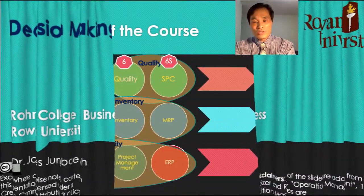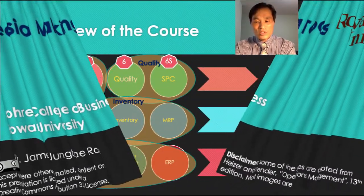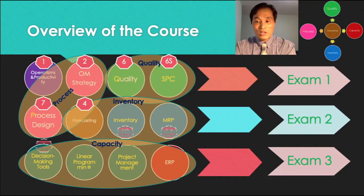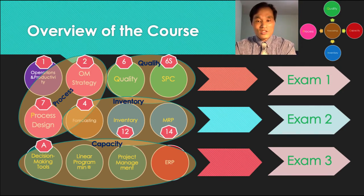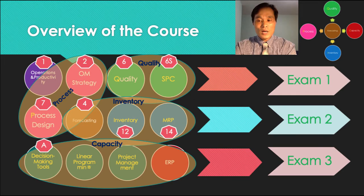Looking at the structure of this course, we have now covered three-fourths of the course topics. We learned quality, process, and inventory decisions, and now we embark on the capacity portion of operations management. We kick off capacity topics with the decision-making tools.